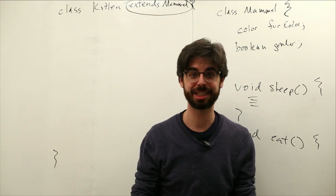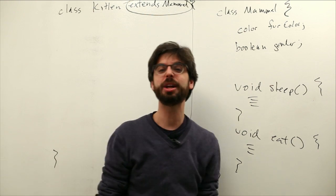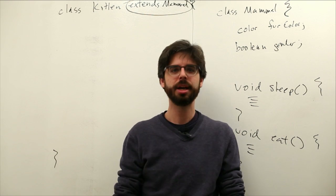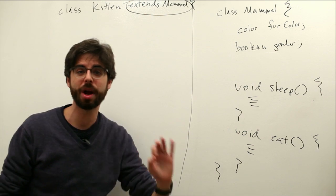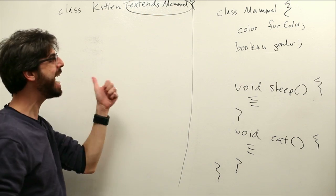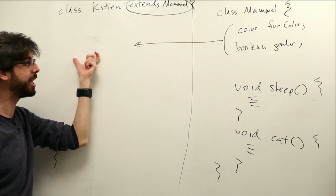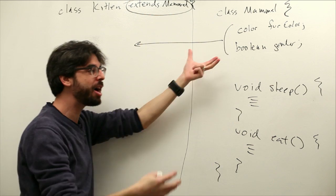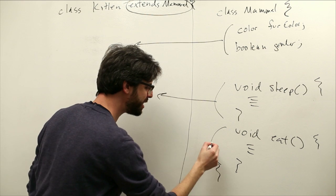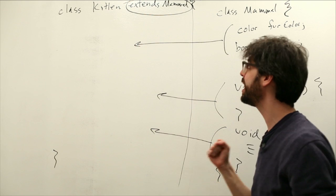This is the new syntax for inheritance. What we're saying is kitten is a child class of mammal. Mammal is a parent class of kitten. We also use the words superclass, subclass, but extends is the key word we write in our code to indicate that kitten extends mammal. And what this means is that kitten inherits everything from mammal. It's as if we wrote all the variables from mammal over here. We don't have to type them or write them in.